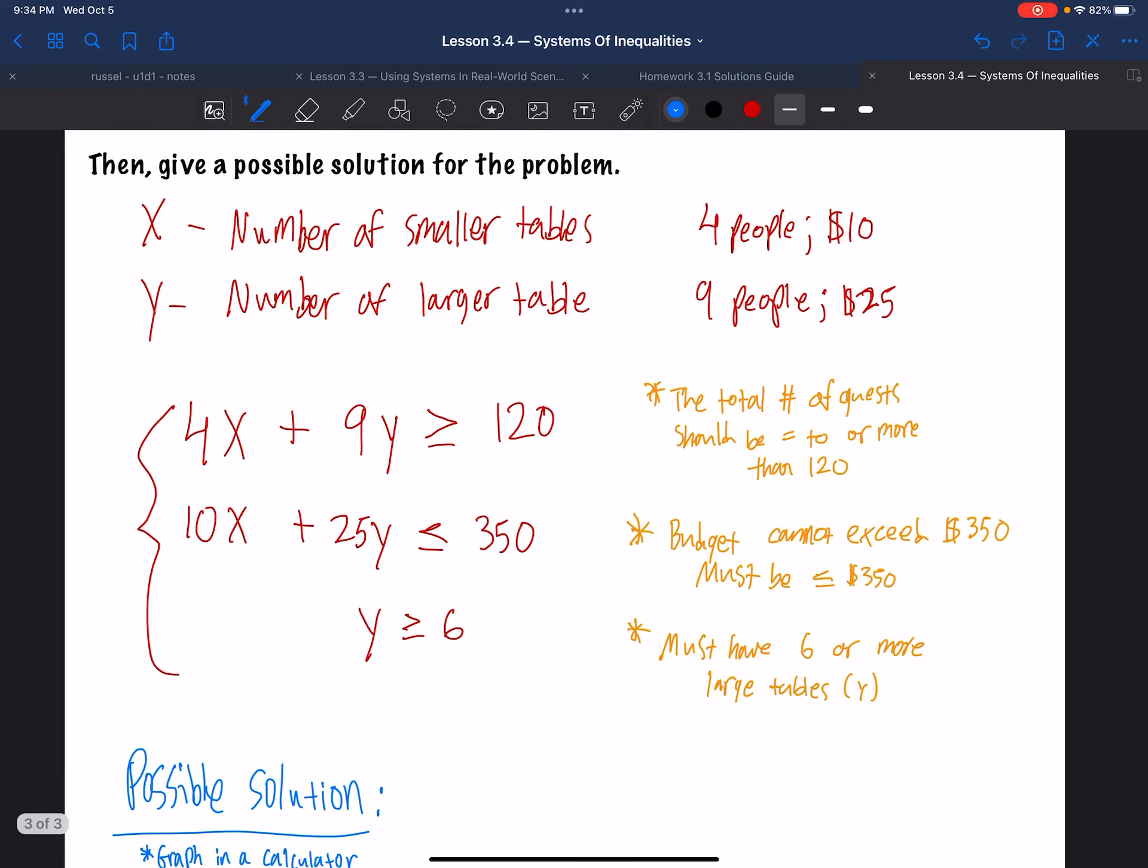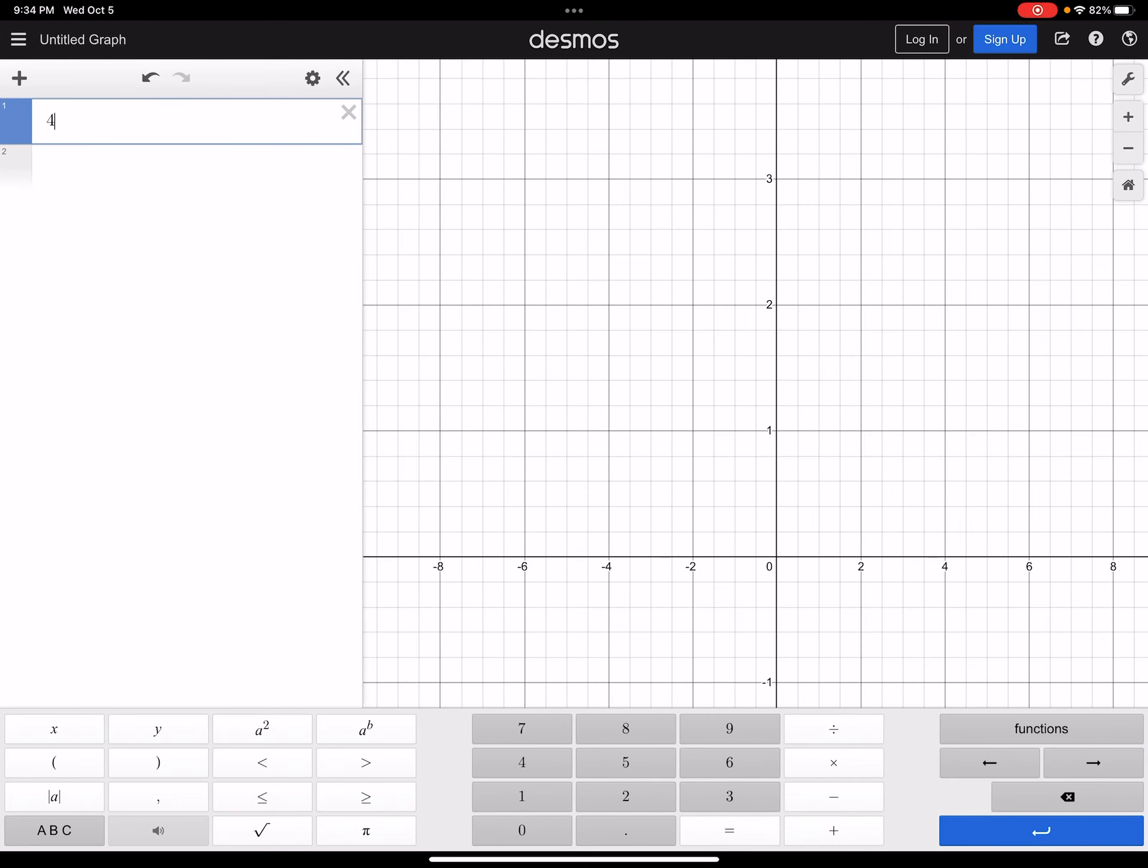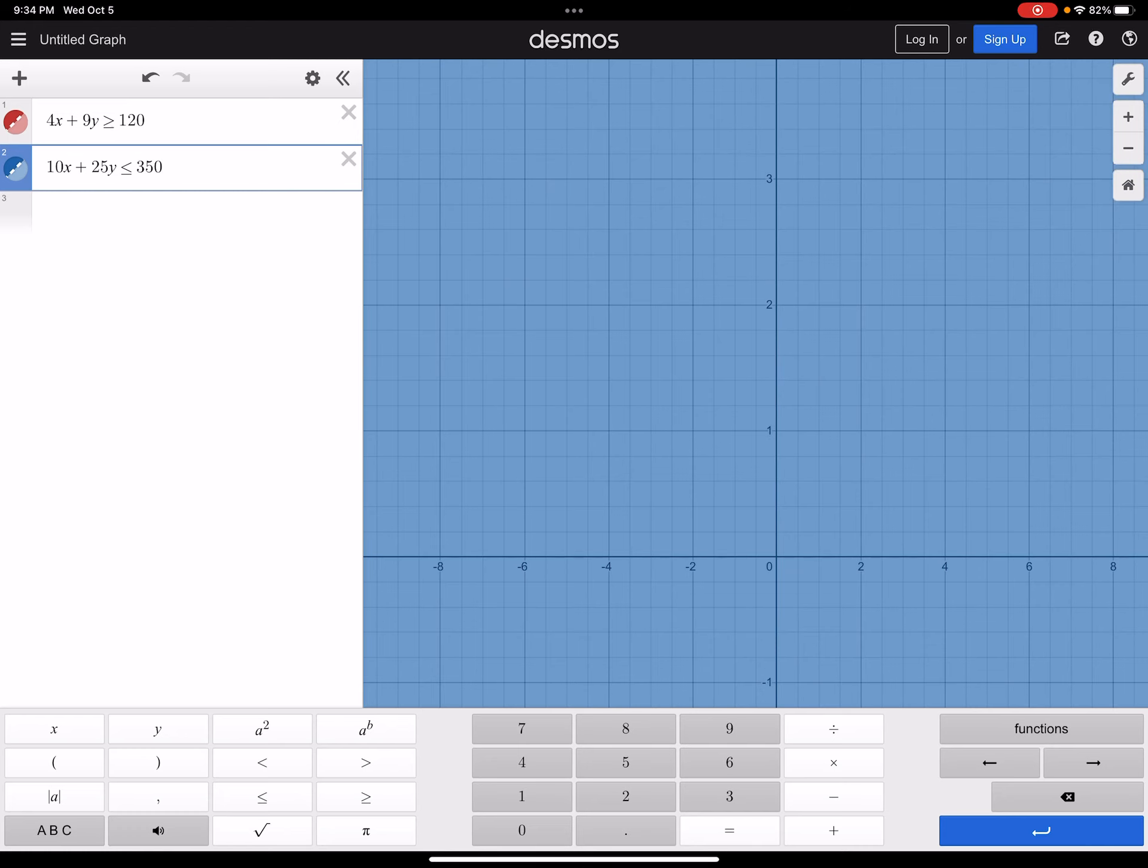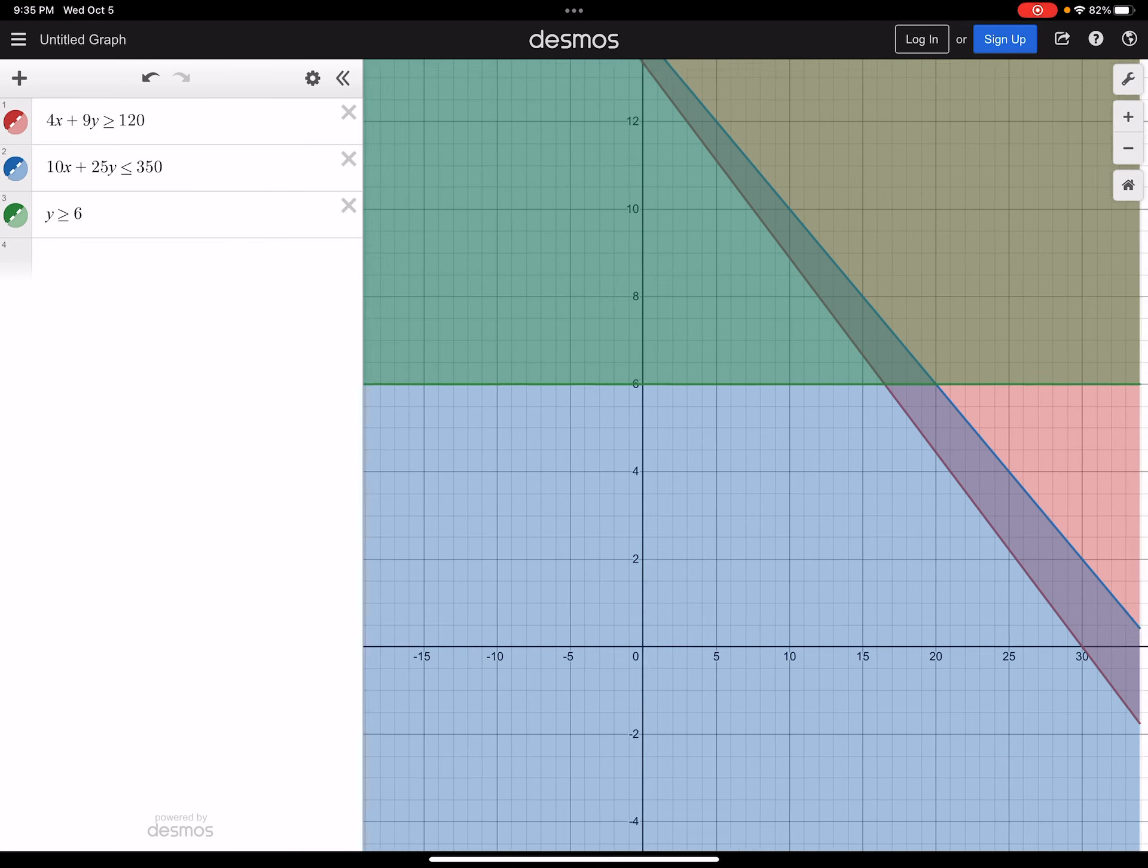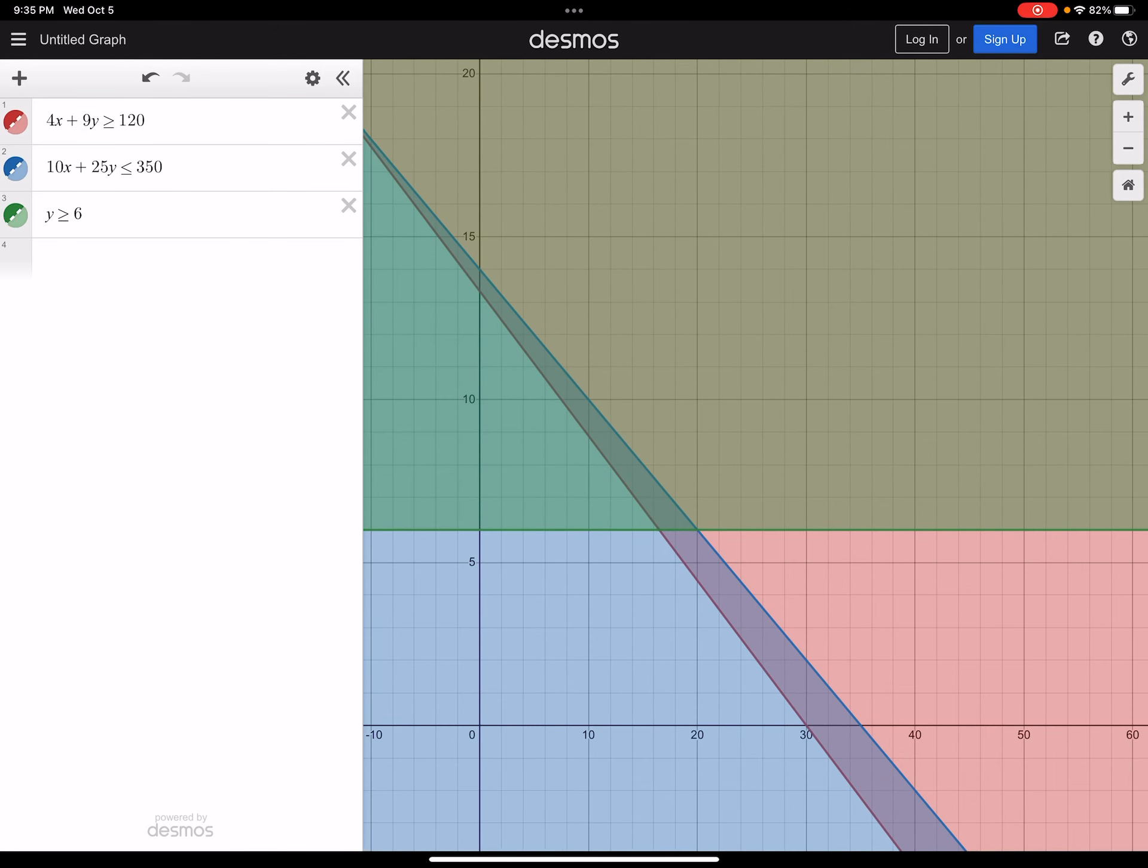And what were the equations? 4x plus 9y is greater than or equal to 120. So let's do that. 4x plus 9y is greater than or equal to 120. The next equation I believe was 10x plus 25y is less than or equal to 350 to meet that budget requirement. And the last one was that the number of tables should be at least six, meaning six or more. And now I scroll out. I really like Desmos because it's so easy to zoom. You can zoom out on your graphing calculator too, but sometimes it's hard to read. Desmos is pretty nice with scaling. I'll give it that.